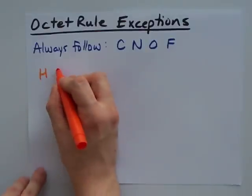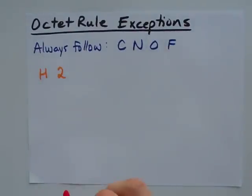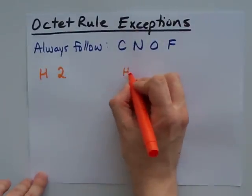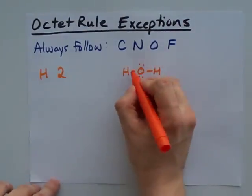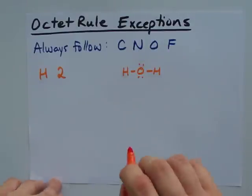Hydrogen wants two electrons in its outer shell. See, here's a hydrogen in water. Hydrogen's happy with just the two electrons in the bond, and you're good to go.